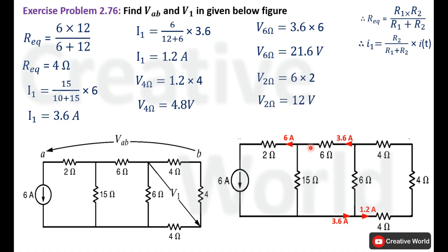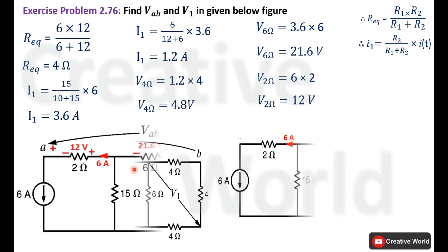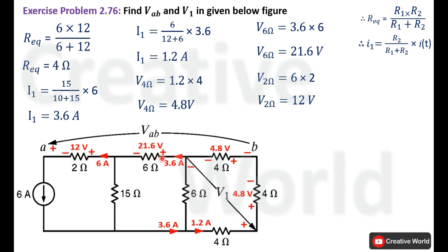We place these calculated voltages with their polarities in the original circuit. Polarities are taken according to the passive sign convention: current-entering terminals are positive and current-leaving terminals are negative. The notation VAB indicates point A is at higher potential than point B, so A is positive and B is negative. V1 has a negative sign on one point and a positive sign on the arrowhead.